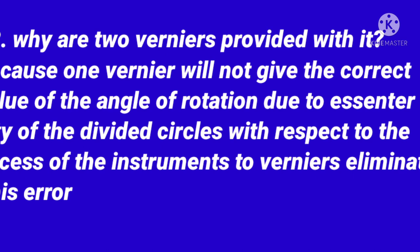Why are two verniers provided with a spectrometer? Because one vernier will not give the correct value of the angle of rotation due to eccentricity of the divided circles with respect to the axis of the instrument; two verniers eliminate these errors.